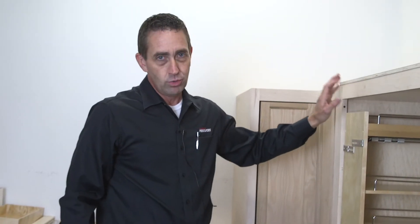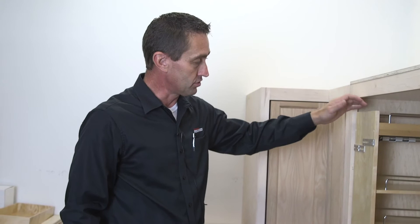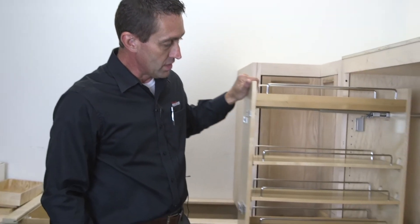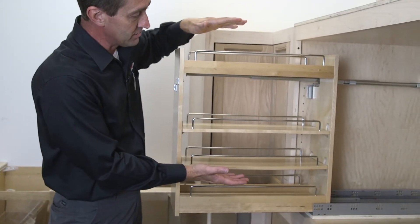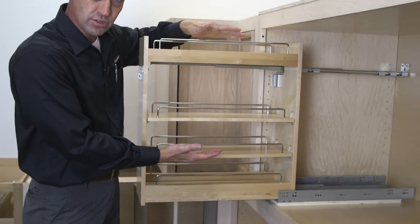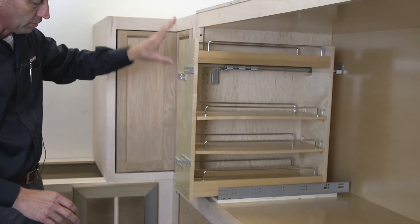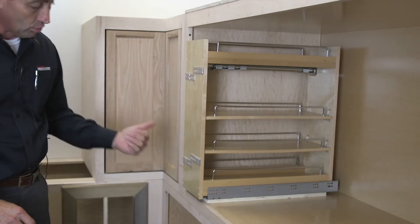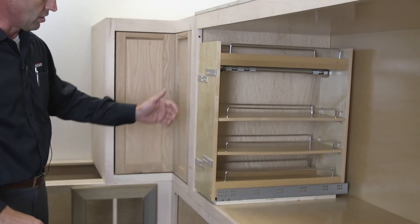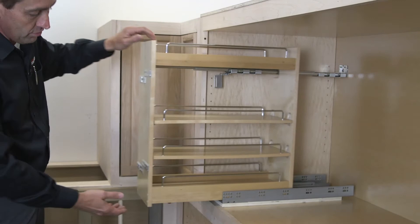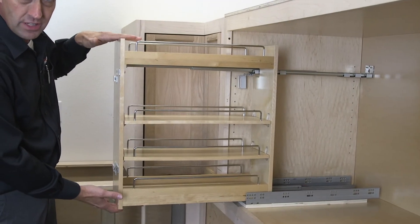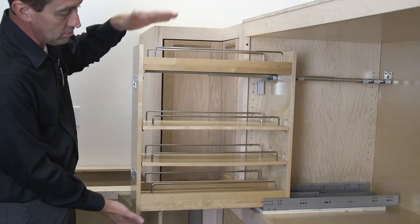This next installation tip is probably one of the most important to get across to you today, and it has to do with the slides and how the unit can be pinched. When it pinches, the self-close doesn't want to work properly, or the unit doesn't want to roll, or the soft close may not pull the unit in all the way. We can think about it like this: this is really a drawer box that's been turned up vertically.